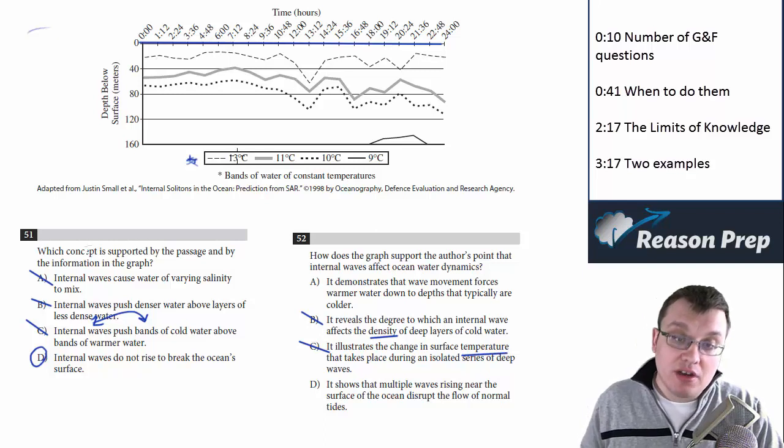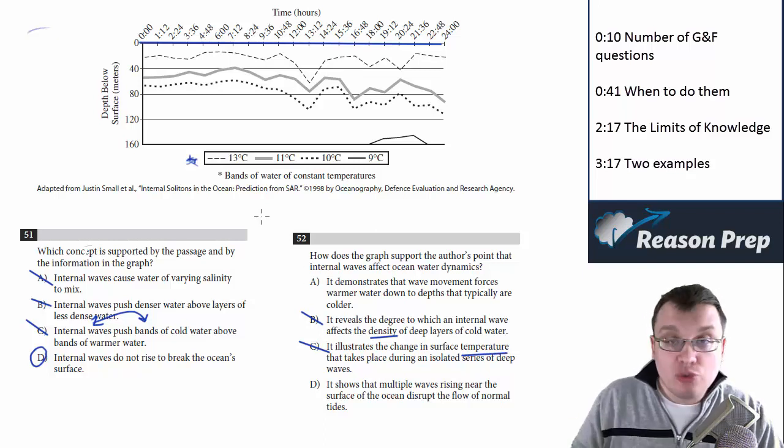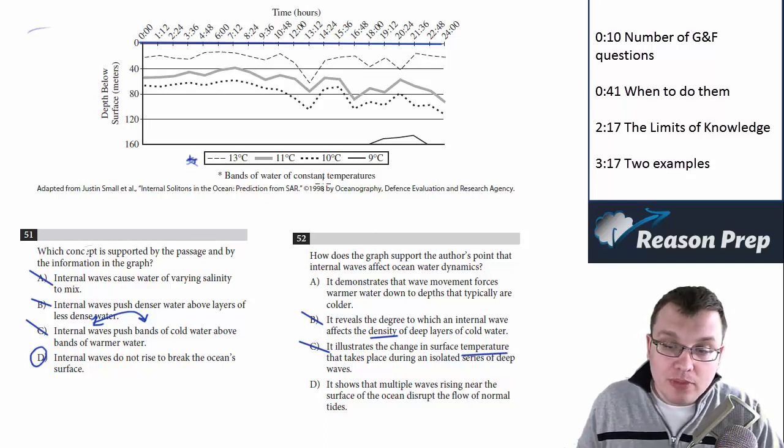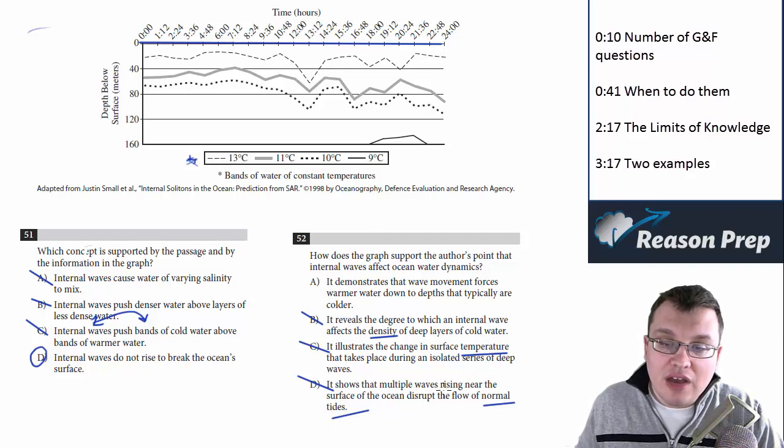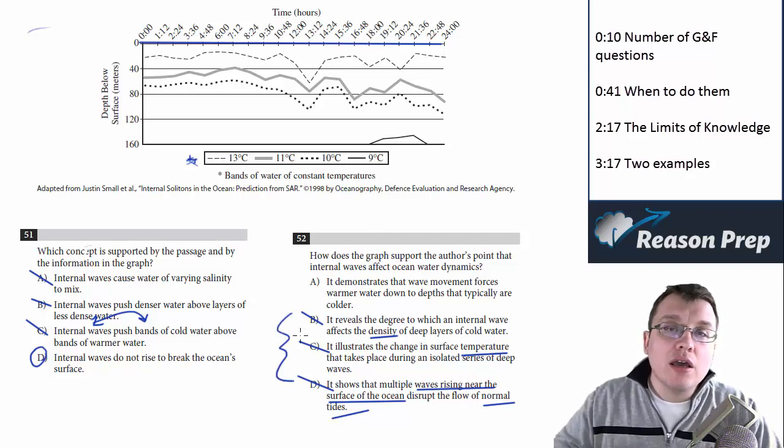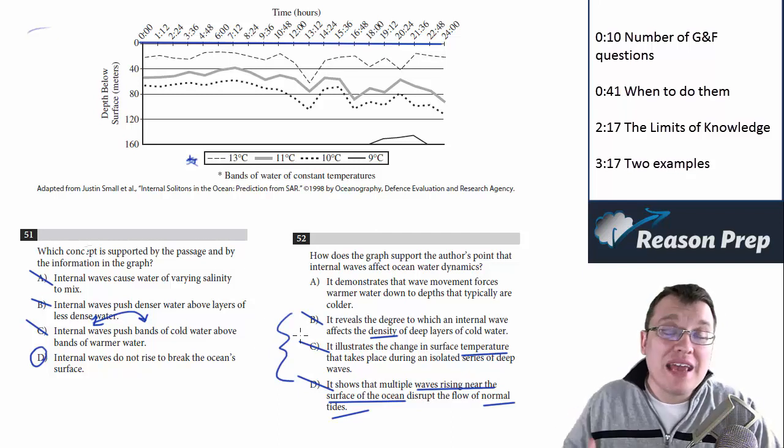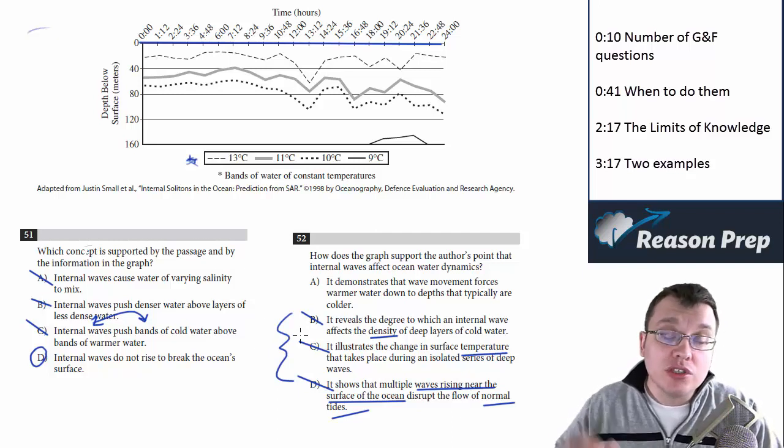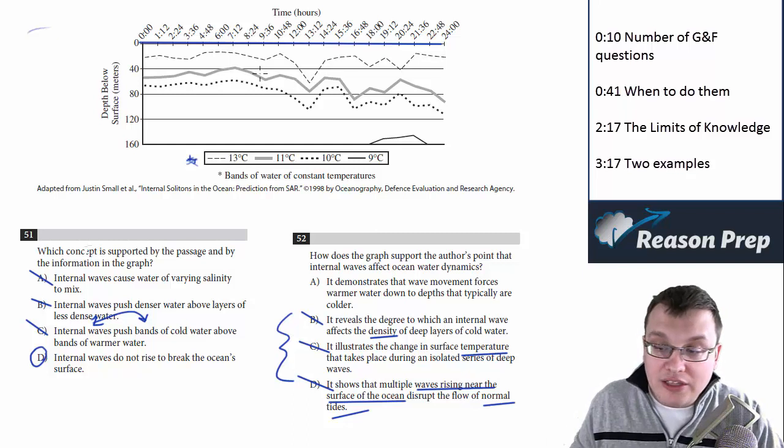Now, temperature, it does, but that's the temperature of the waves. So we have to be specific about this. D says nothing about, number one, the flow of normal tides. We don't see anything about tides here. But as we already discussed for the previous question, these waves are not even getting to the surface of the ocean anyway. So that doesn't make any sense. So again, B, C, and D just aren't represented by the figure. And you can't make any logical inferences or conclusions based on the figure that would lead you to one of these choices.